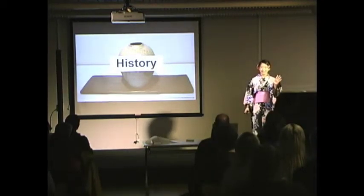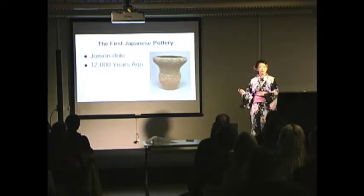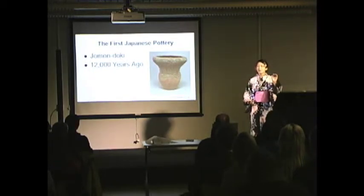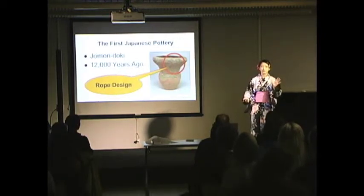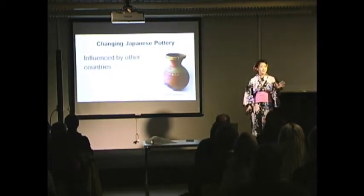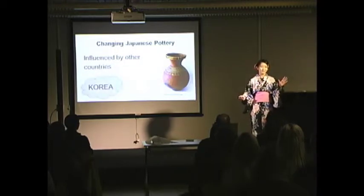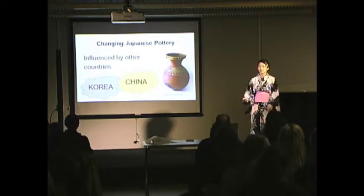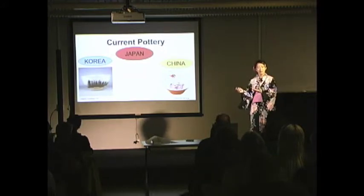First, I focus on the history. The first Japanese pottery, called Jomon Doki, was started 12,000 years ago. Jomon means rope design — jo means rope, mon means design, and doki means pottery. This pottery has a rope design, so that's why it's called Jomon Doki. After that, many foreign people came to Japan and shared their culture. Japanese pottery was influenced by other countries, especially Korea and China, and Japanese pottery began to look like these countries' pottery. Nowadays, Japanese pottery is still influenced by Korea and China.